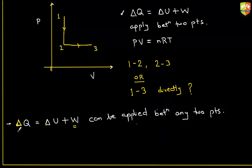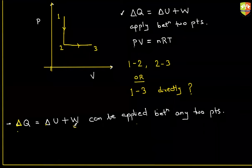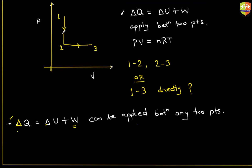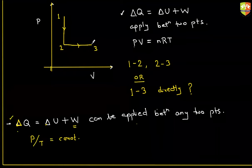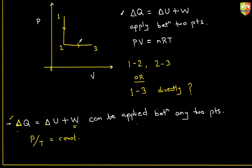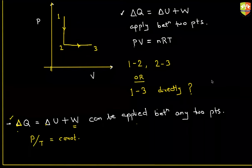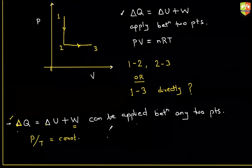When you apply ΔQ = ΔU + W for different kinds of processes separately, not only can you use this equation but you can also use the process equation. For example, if you apply this equation between points 1 and 2 which is isochoric, you can use P/T = constant. Similarly, when you apply first law between points 2 and 3, you can use V/T = constant — by the way, temperature should be in Kelvin.